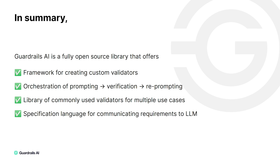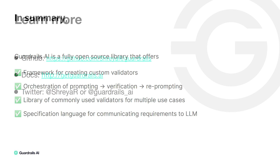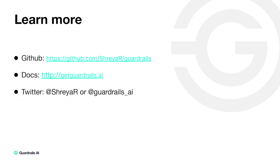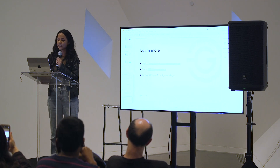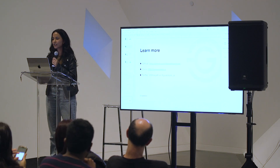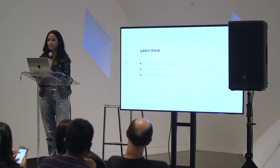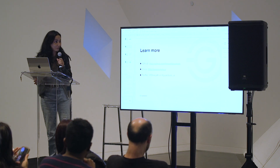So once again, what Guardrails offers: a framework for creating validators, orchestration of prompting and verification and re-prompting, a library of many commonly used validators, and a specification language for communicating with LLMs. To follow along, you can check out the GitHub project at shreya-r/guardrails. Documentation is at getguardrails.ai, or you can follow me on Twitter at shreya_r or guardrails_ai, where I talk about this constantly. Thank you so much.